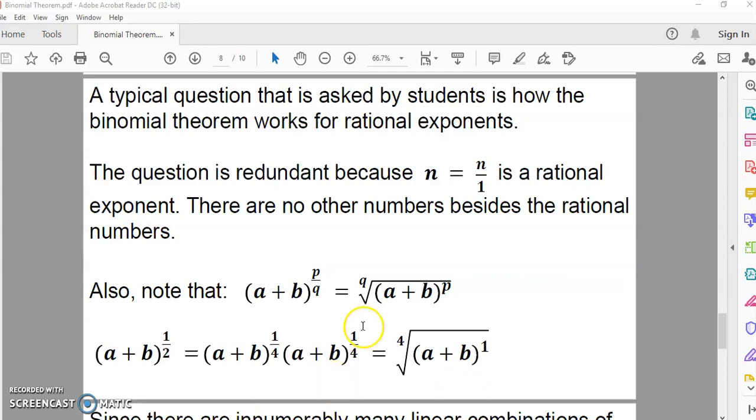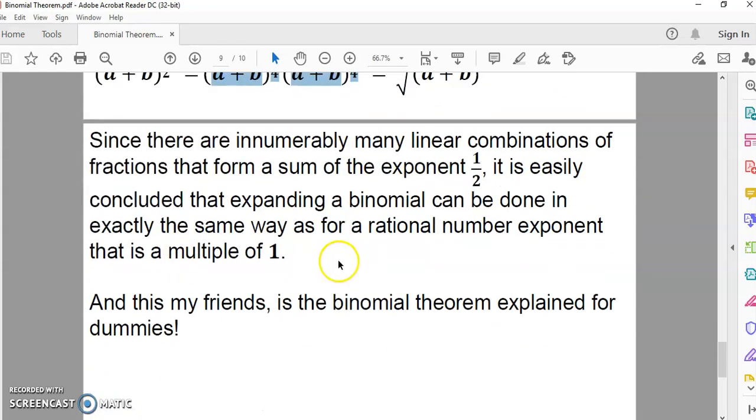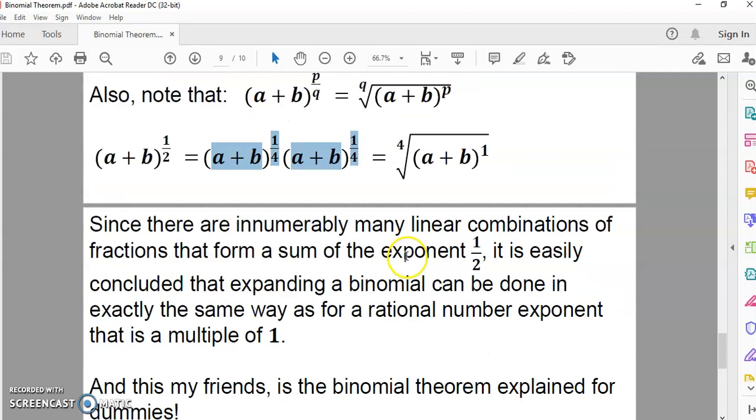So, that you can, for example, say that the square root of a plus b is equal to the product of these two binomials, which is equal to this, of course. And there are many ways, infinitely or innumerably many ways to write, I hate the word infinite, to write this, these linear combinations. So, the important thing to note is that these linear combinations of fractions form a sum of the exponent, whatever it is. In this case, a half. And it can be easily concluded that expanding a binomial can be done in exactly the same way as for a rational number exponent that is a multiple of one, as we see over here.